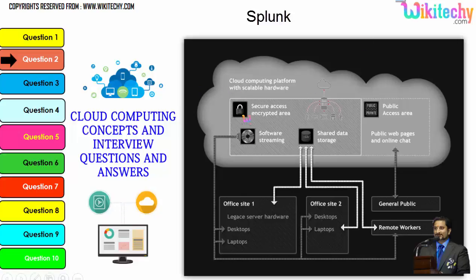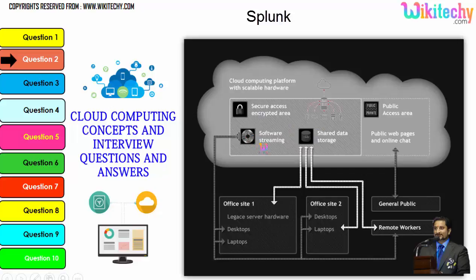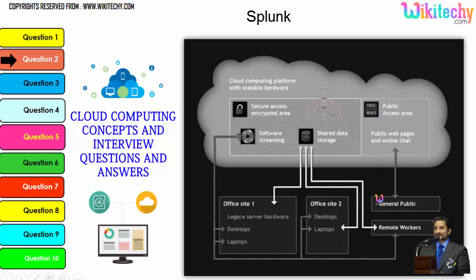Cloud computing has a public access area with public web pages for end users. There is also secure data access, shared data storage, and software streaming. Companies can use it as a private environment, and the public can also use it to access web pages or websites. This is how cloud computing works.